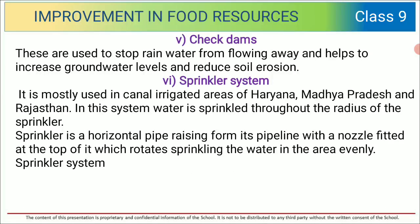Check dams are used to stop rainwater from flowing away and help to increase groundwater levels and reduce soil erosion. The sprinkler system is mostly used in canal-irrigated areas of Haryana, Madhya Pradesh, and Rajasthan.